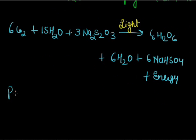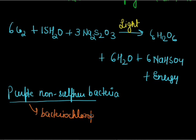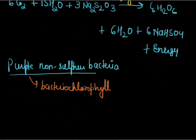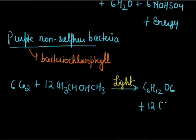There is another type: purple non-sulphur bacteria. These possess the pigment bacteriochlorophyll and accomplish photo-reduction of carbon dioxide in the presence of alcohols and organic acids. The equation is: 6 CO₂ + 12 molecules of propyl alcohol, in the presence of light, forms glucose, dimethyl ketones, and water.